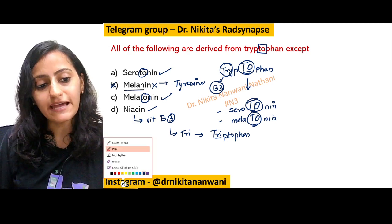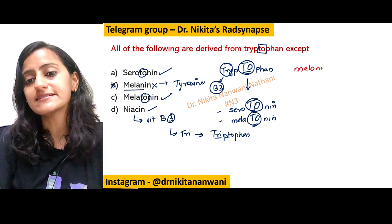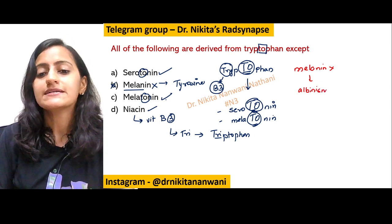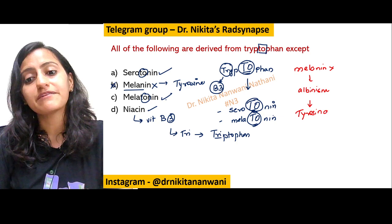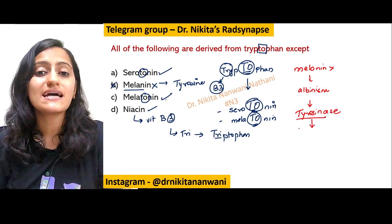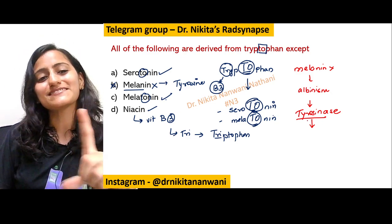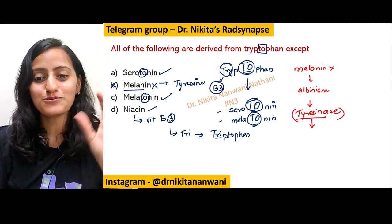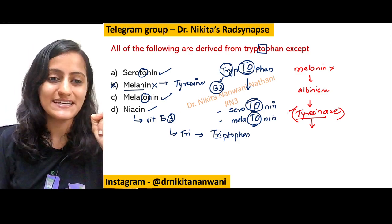Melanin is derived from tyrosine, and that's the reason when melanin is absent, it leads to the condition called albinism. Albinism is basically a defect in tyrosine metabolism. The enzyme deficient is tyrosinase. Can you tell me what is the metallic cofactor for tyrosinase? Do let me know in the comments. We have already discussed mnemonics for cofactors in one of our previous videos, so do watch that as well.